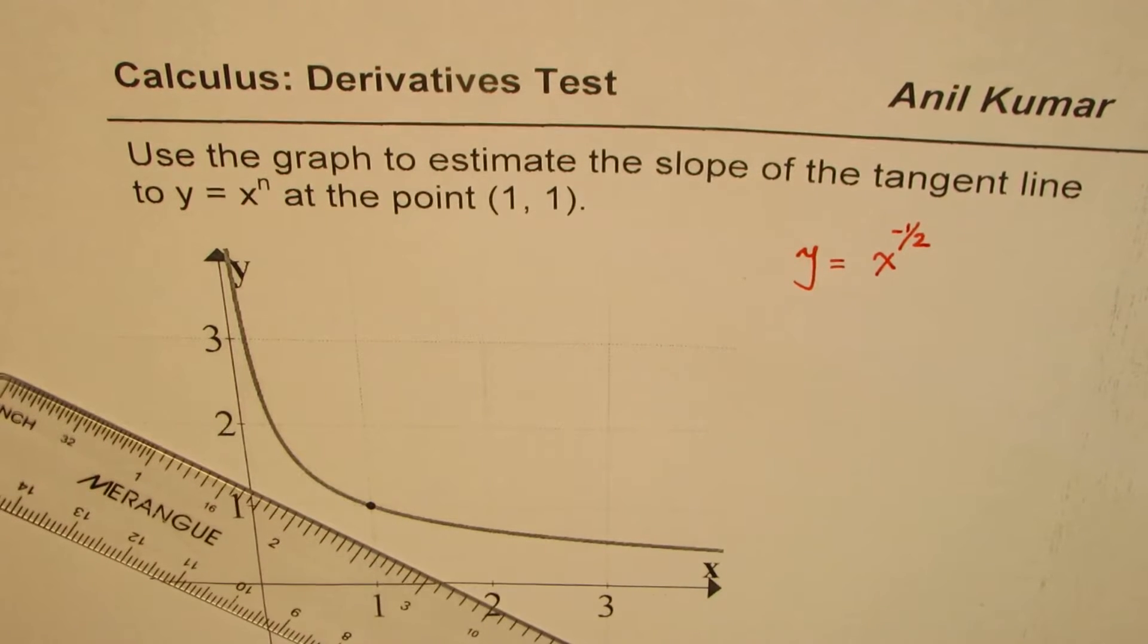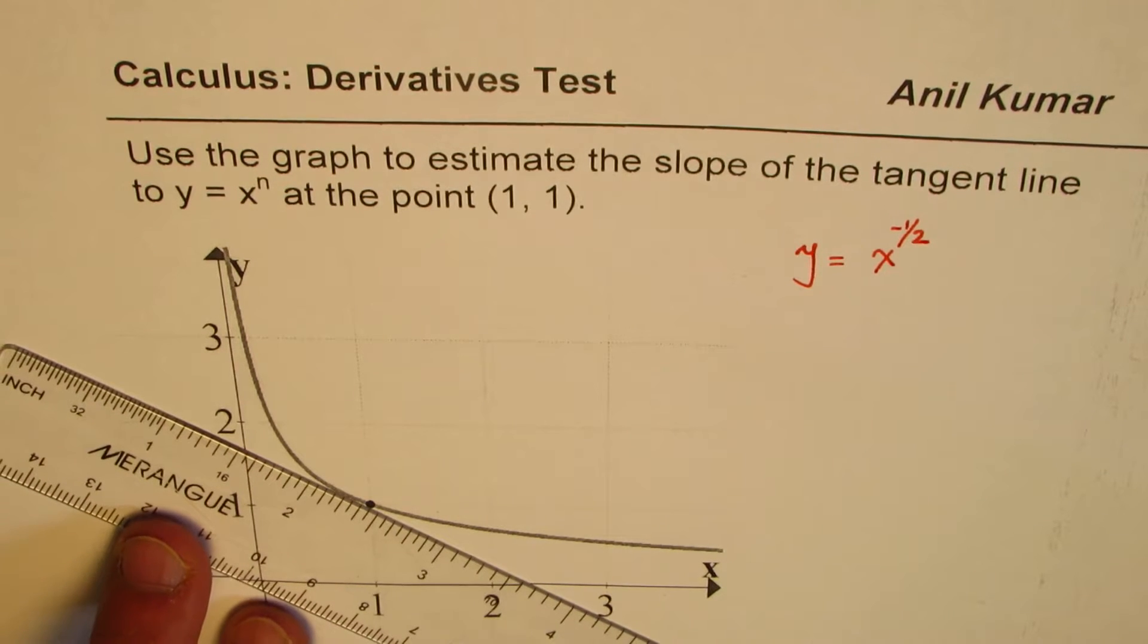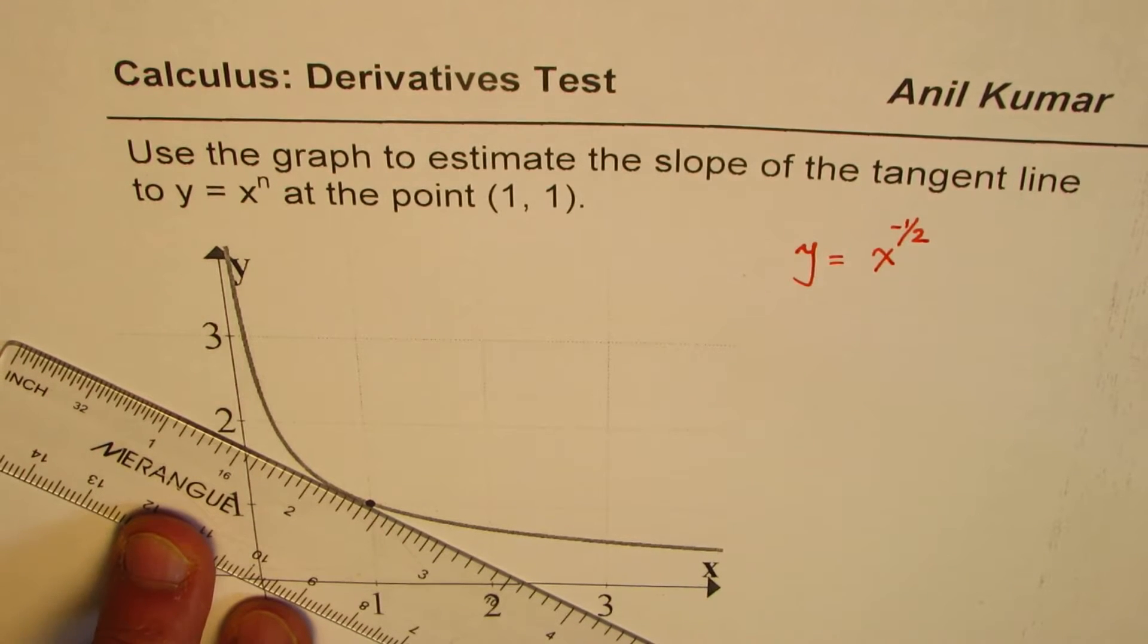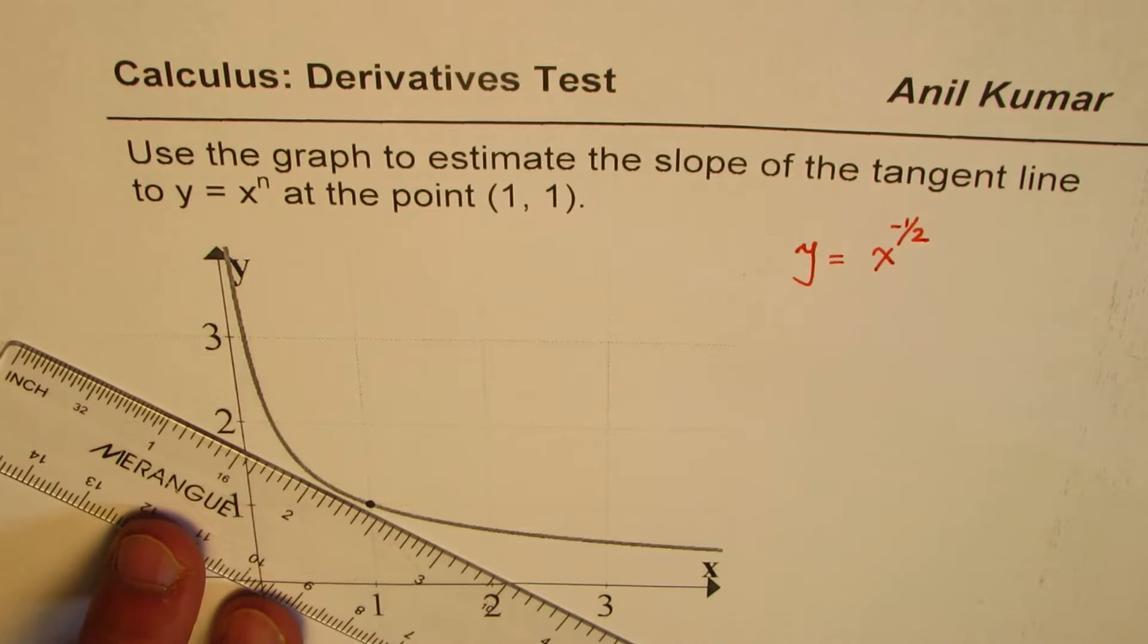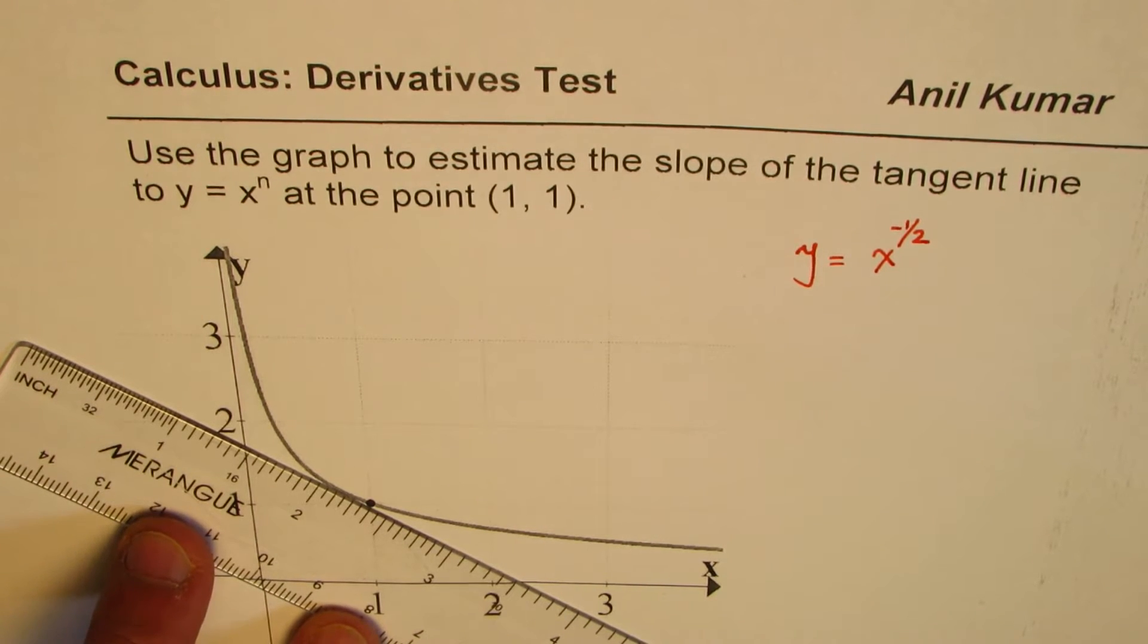We are given the point (1, 1), we need to approximate. Do you see that? So just take a ruler and just draw a tangent line here, that's the whole idea. So if you draw a tangent line here you will get approximate value of the slope of this tangent line.